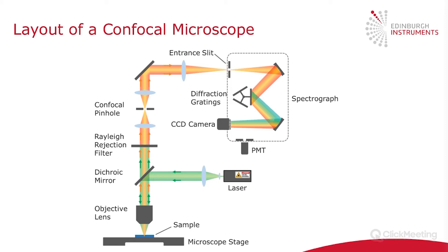The spectrograph is used to wavelength-select the signal. The light comes in and is focused using a mirror onto a diffraction grating, which separates the light into its constituent wavelengths. This is usually a grating turret — I've shown three here, but on our Raman microscopes there are actually five grating turrets.